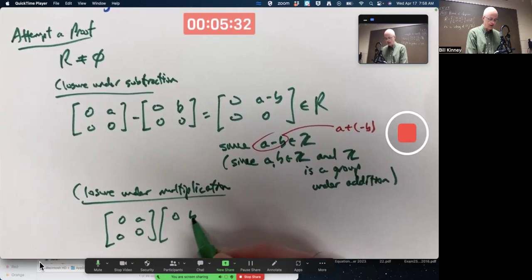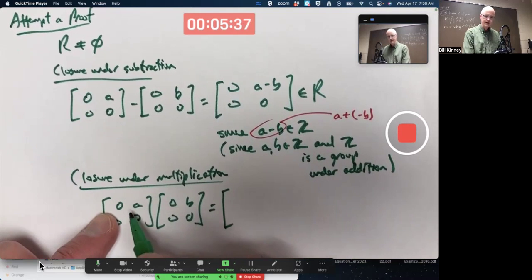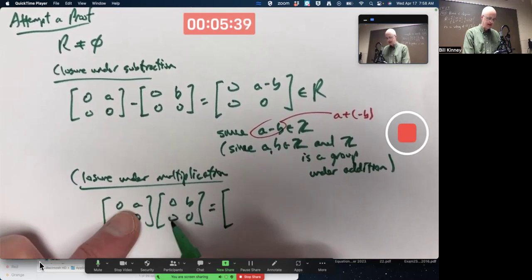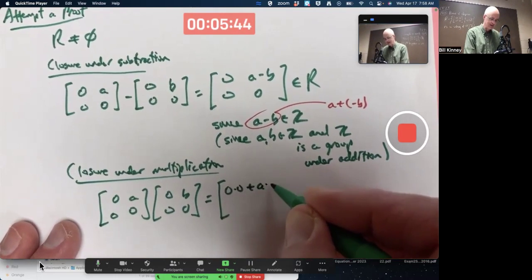You do ordinary matrix multiplication here. Upper left entry is going to be 0 times 0 plus A times 0. I'll go ahead and write it out for extra measure. 0 times 0 plus A times 0.